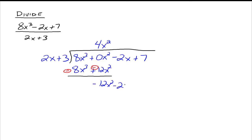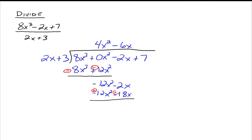Bring down the next part, negative 2x, and start all over. What do we need to multiply 2x by to make it look exactly like negative 12x squared? That'd be minus 6x. Negative 6x times 2x gives you negative 12x squared. So multiply negative 6x times 2x plus 3, and that gives us negative 12x squared, and negative 6x times 3 is negative 18x. We want to subtract negative 12x squared minus 18x, so we distribute the negative 1 through — this becomes plus, and this becomes plus. Add them up: the 12x squareds go away. Then we have negative 2x and positive 18x, which gives us 16x.